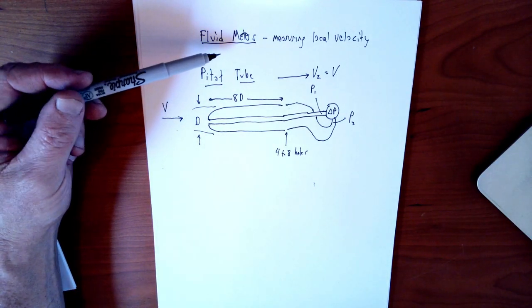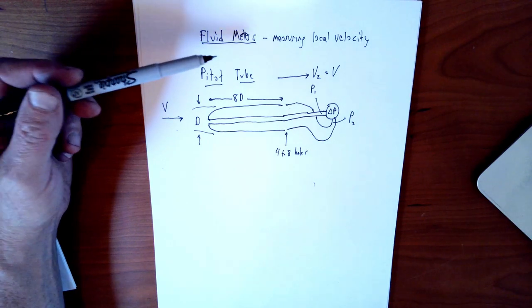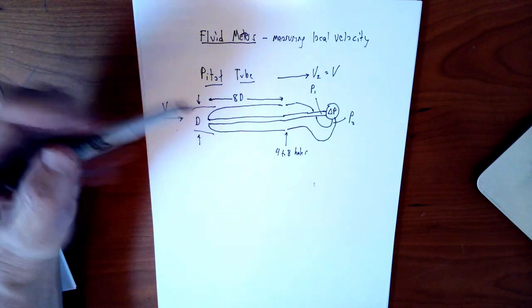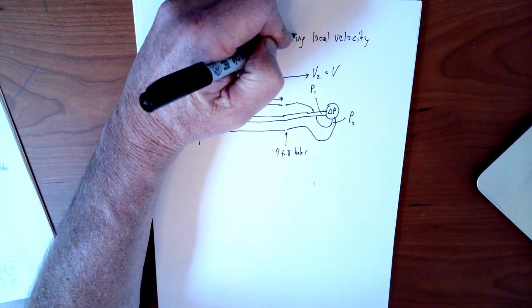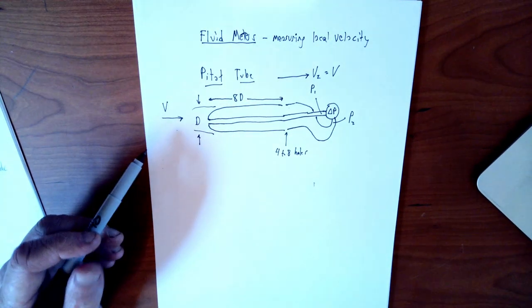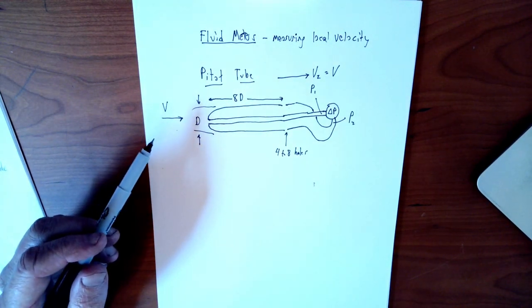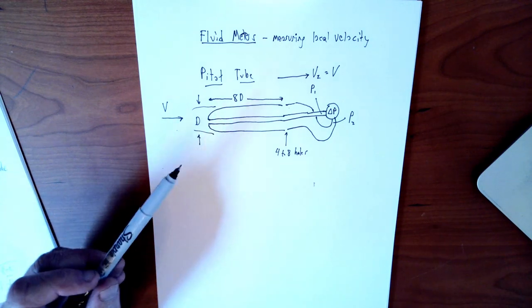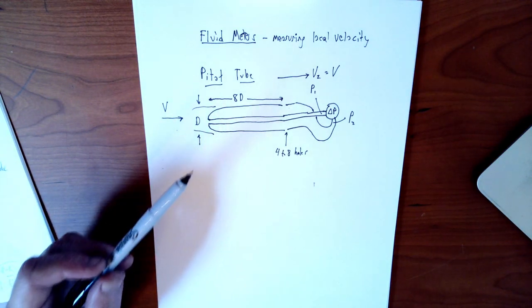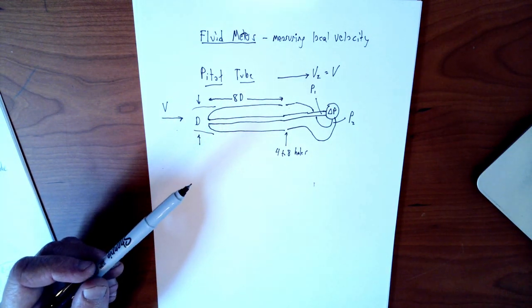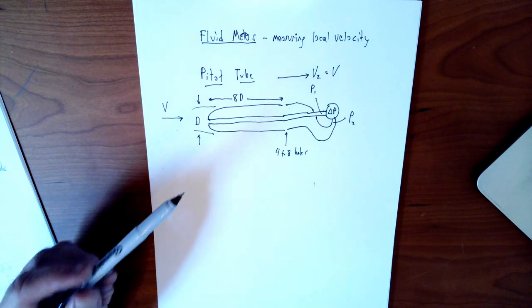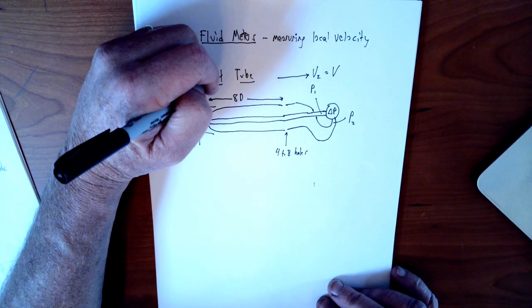There are many things you can measure in a fluid, of course: density, pressure. We've talked a little bit about using manometers and pressure gauges, but velocity is certainly the one that is in some ways the hardest because it's hard to do it without disturbing the flow. As soon as you try to measure the velocity in many cases you change the velocity.